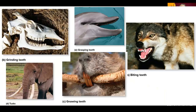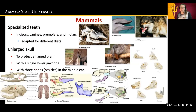Mammals also have specialized teeth. They can have incisors, canines, premolars, and molars that are all adapted for different diets. They have an enlarged skull because mammals have a larger brain, and so to protect their brain, they have a larger skull than reptiles. They have a single lower jawbone, which is fused together, unlike reptiles. And they have three bones found in the middle ear, which are called ossicles.